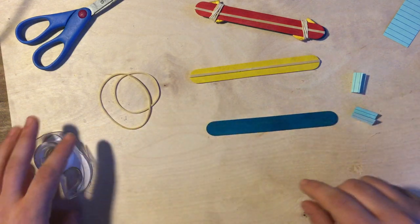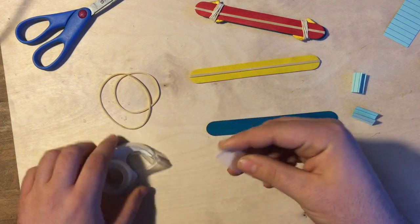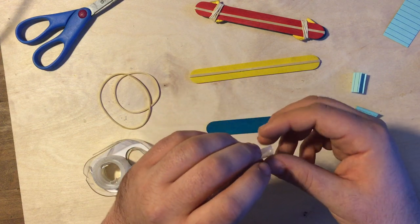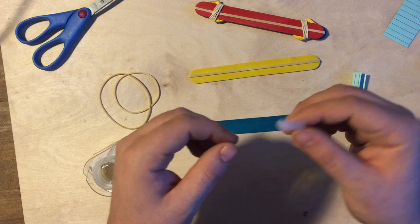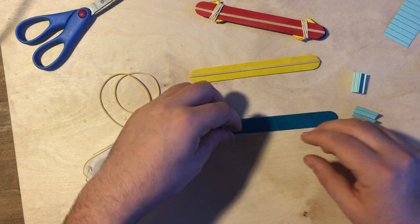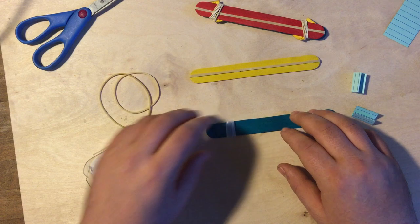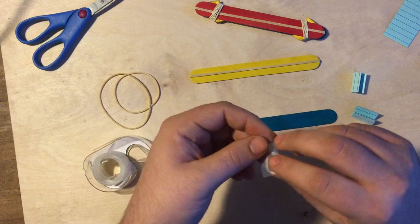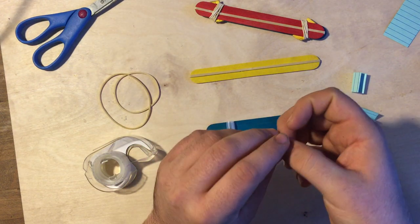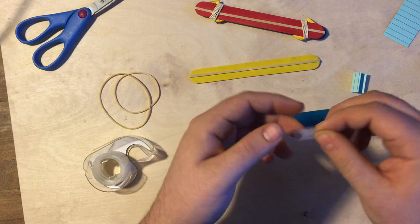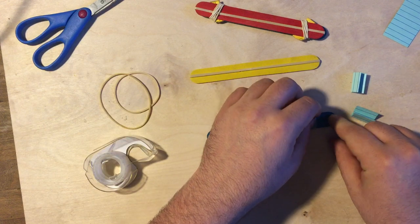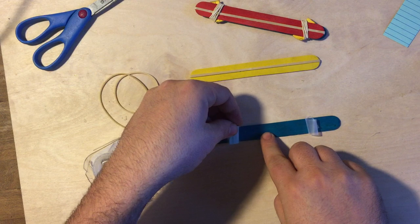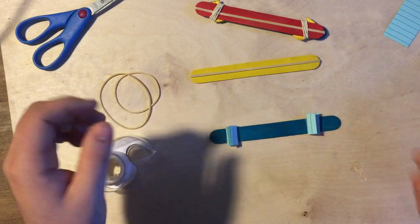Now I'm going to take my second Popsicle Stick. I'm going to take two small pieces of scotch tape and just roll them so that the sticky side is out. Like this. Now I'm going to place one of them here on the left side of my stick about an inch from the side and do the same thing again. Place this one an inch from the right side.